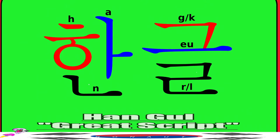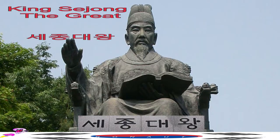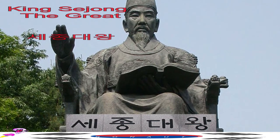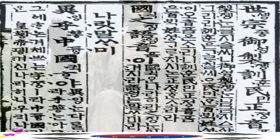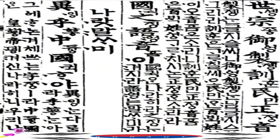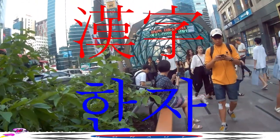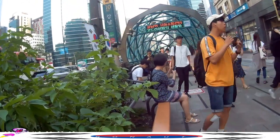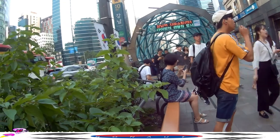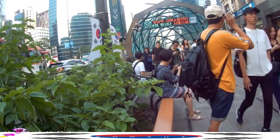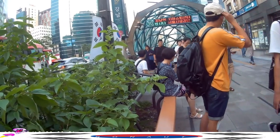In the 15th century, King Sejong the Great created the Korean alphabet Hangul as a replacement for the elite Chinese-based Hanja script. This really increased Korea's literacy rate, especially after their independence from Japan in the mid-20th century.